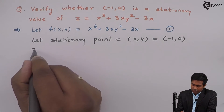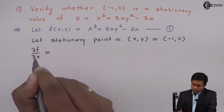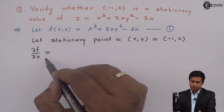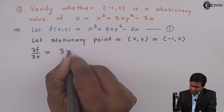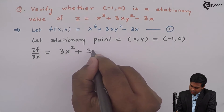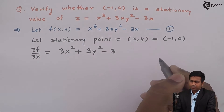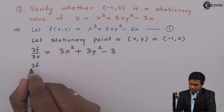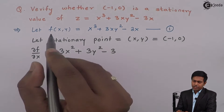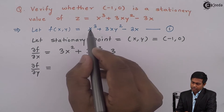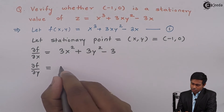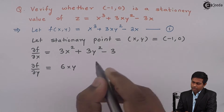So for that I will find out all the partial differentiations which are required. First of all I will find out ∂f/∂x. So ∂f/∂x is the partial differentiation of f with respect to x. Here we will get 3x², plus 3y², and minus 3. Next, we will find out ∂f/∂y. By partial differentiating f with respect to y we will get 0 here, then 3x as it is multiplied by 2y, so 6xy, and here we will get 0.